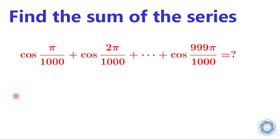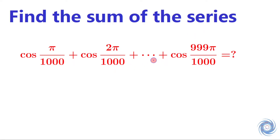Here the question is: find the sum of the series, which is given by cos(π/1000) + cos(2π/1000), and the sum continues up to cos(999π/1000).